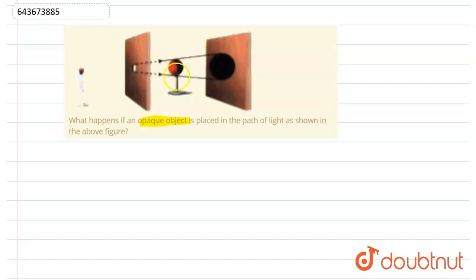an opaque object has been placed between the path of light. And what we now see is it has